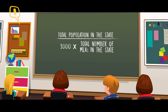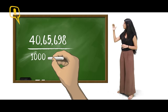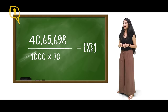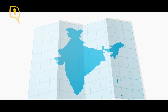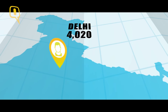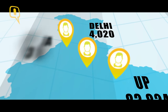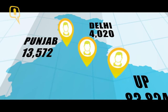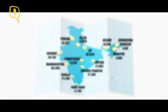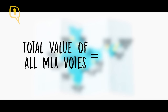Take the example of Delhi. You take the total population of Delhi, divided by 1000 into the total MLAs in Delhi, and you get 58. By this calculation, the total value of all the MLA votes in Delhi is 4,020. For UP, it's 83,824 and for Punjab, it's 13,572. If you add it like this for all the states, the total value of all the votes of MLAs across all states in India comes up to about 5.5 lakh.